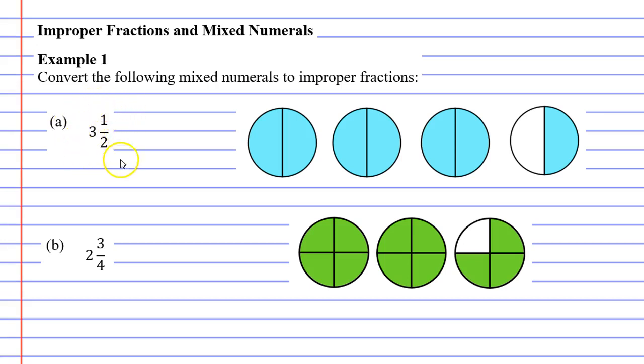So we'll start with question a which is three and a half. I've actually drawn it at right as well. You'll notice that we've got three circles completely colored in representing the three and then half a circle colored in representing our fraction one over two.